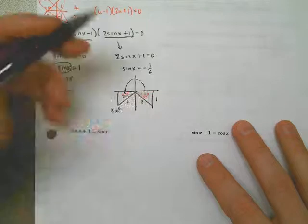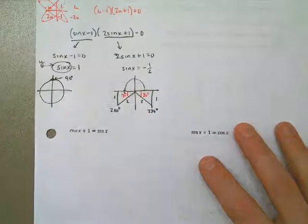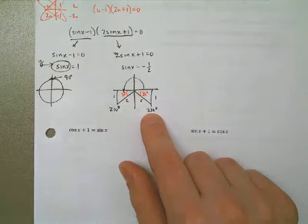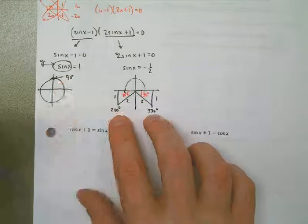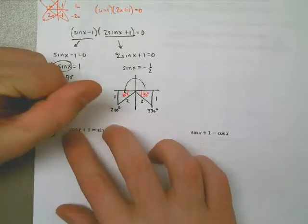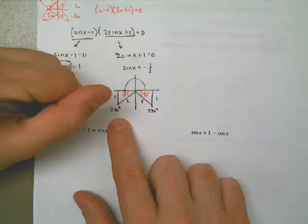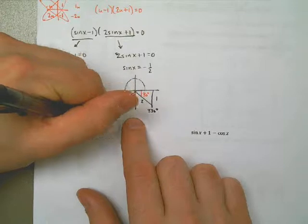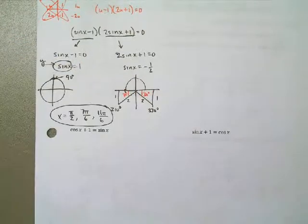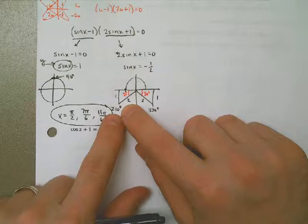Now, this is great, except all these answers are in degrees. So, my last step is to convert into radians. x = π/2. 210 would be 7π/6. And 330 is 11π/6. So, those are my three answers. By the way, how did I do that so quickly? Because π/6 is 30 degrees, and 7 times 30 gives me 210. 11 times 30 gives me 330. That's how I'm doing that so fast in my head.